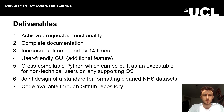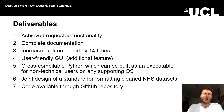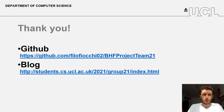The deliverables we achieved include: the requested functionality, completed documentation including a user manual, deployment manual, guidance on how to expand the tool, and information about the code structure. We also provide a user-friendly GUI as an additional feature, a cross-compilable Python executable for non-technical users, standard formatting of the clean NHS datasets, and the code is available through a GitHub repository. Thank you for your attention — these are the GitHub and blog links.